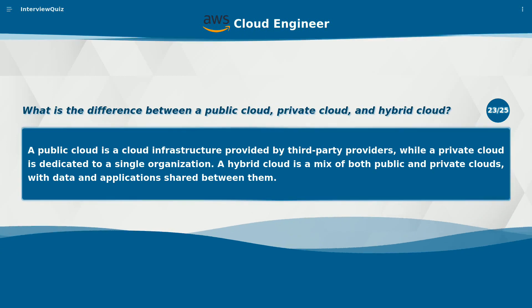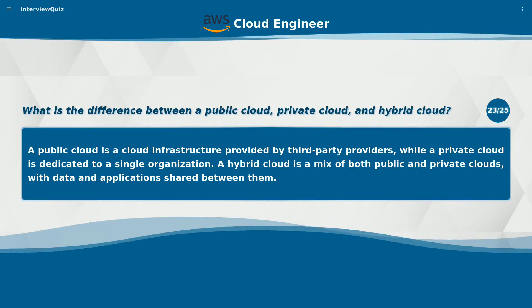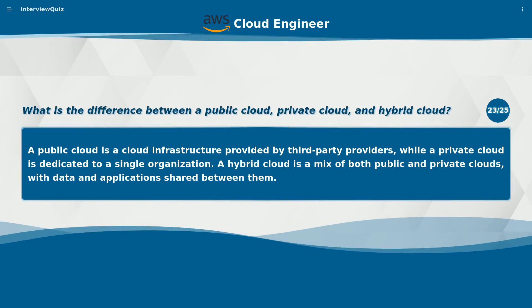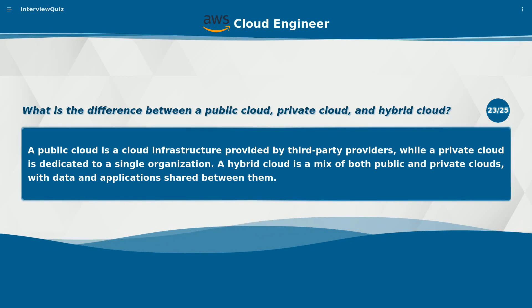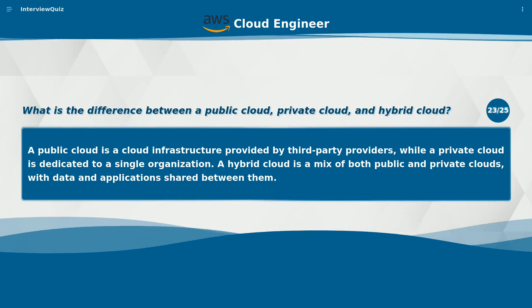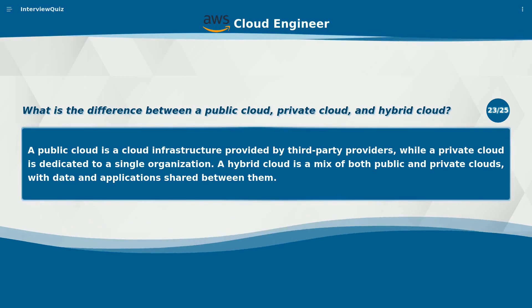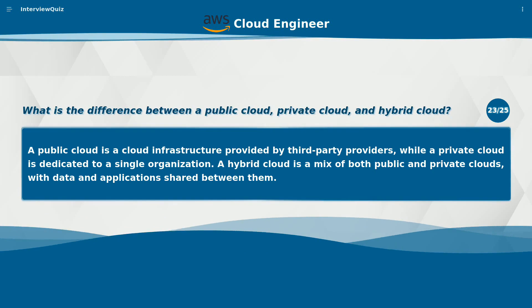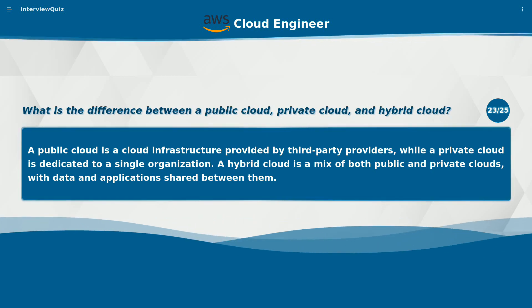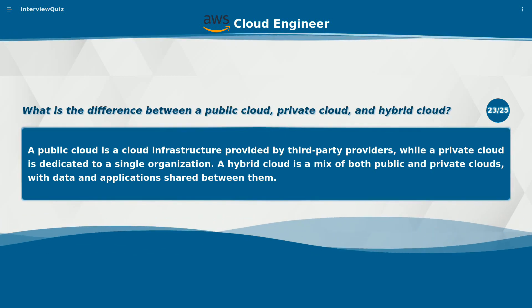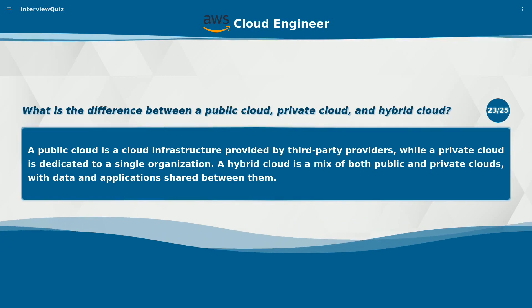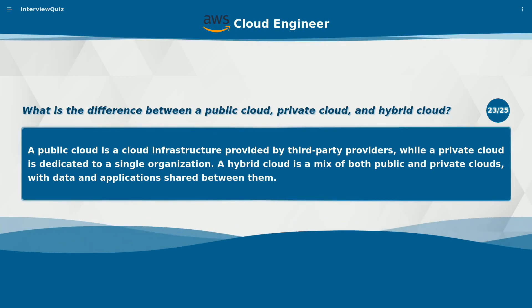What is the difference between a public cloud, private cloud, and hybrid cloud? A public cloud is a cloud infrastructure provided by third-party providers, while a private cloud is dedicated to a single organization. A hybrid cloud is a mix of both public and private clouds, with data and applications shared between them.